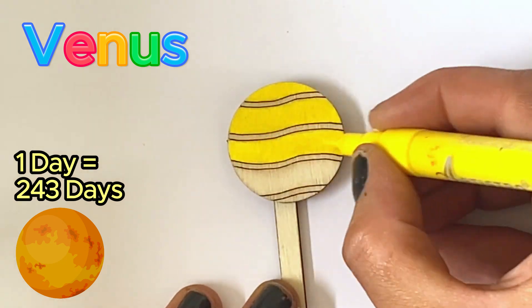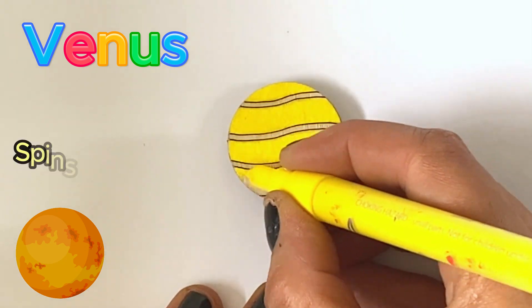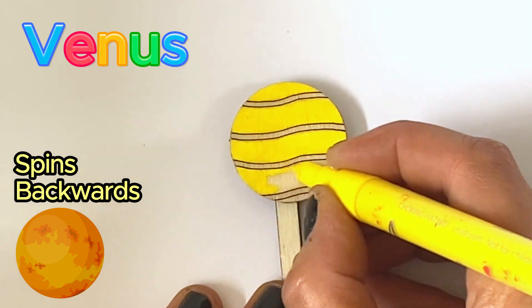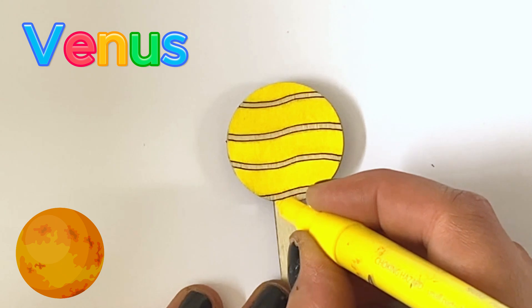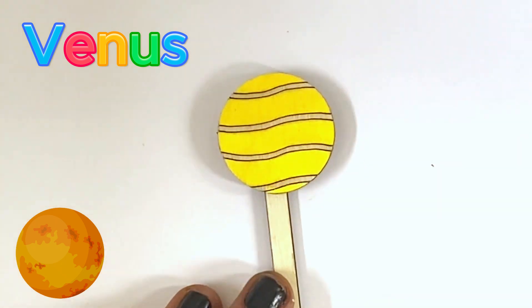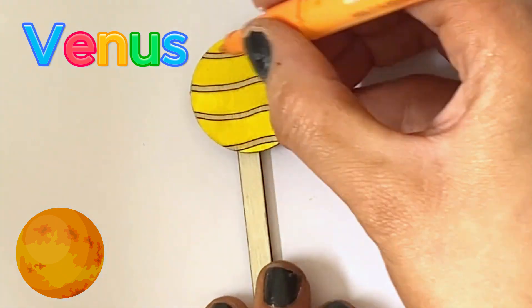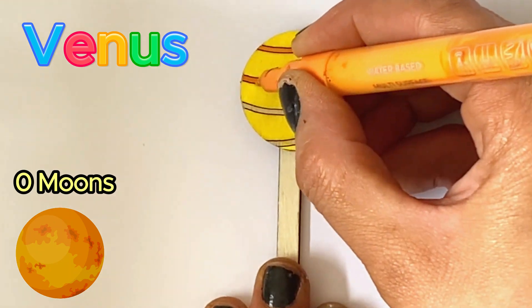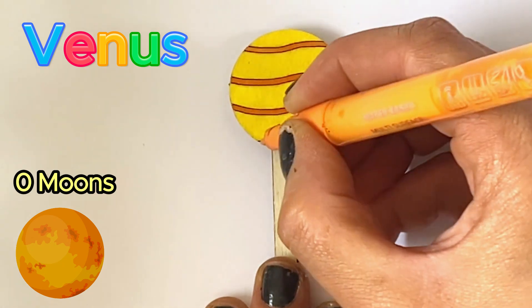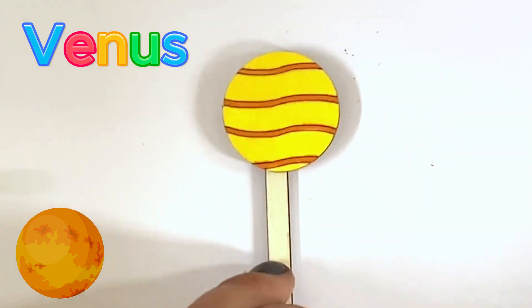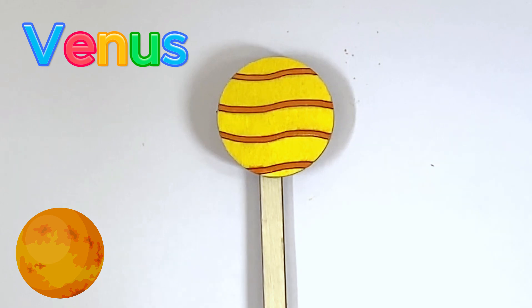Its rotation or day is longer than its year. It also spins backwards on its axis, opposite to Earth's rotational spin. However, it is the closest planet to Earth in distance and size. Venus has no moons, but it is believed to possibly have had a moon millions of years ago. But it is believed to have crashed into it. And there is our finished Venus.